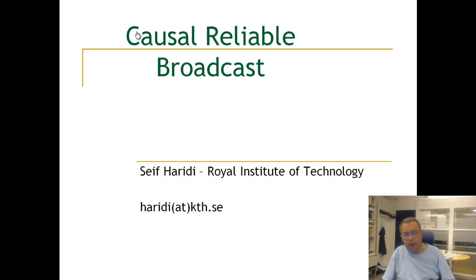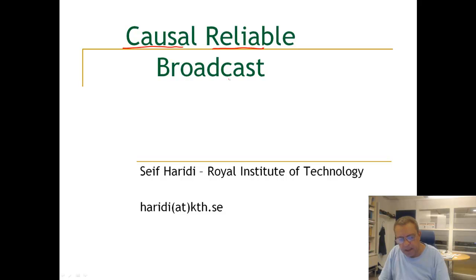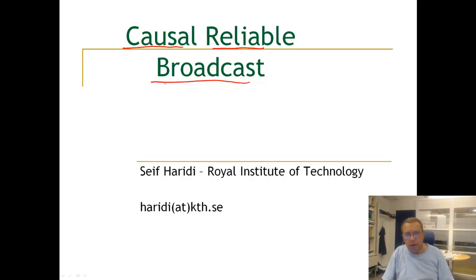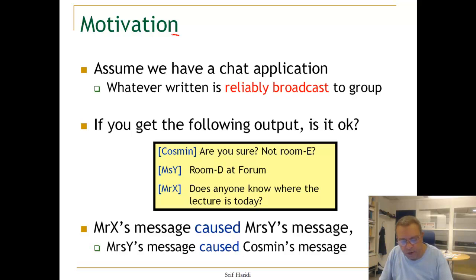In this unit, we're going to talk about causal reliable broadcasts. This is the first time when we try to impose some order on messages broadcast by different processes. So let's look at some motivation.